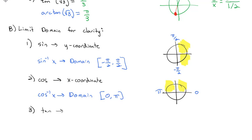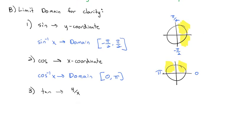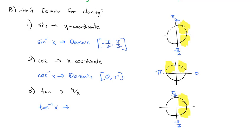For tangent, it uses both the x and y-coordinates, so we had some choices. On the unit circle, we always use the first quadrant, and after much debate it was decided to go with the fourth quadrant for the negative tangents. So tangent has the same domain as sine — it goes from negative pi over 2 up to pi over 2. That's the domain of tangent inverse: from negative pi over 2 to positive pi over 2.